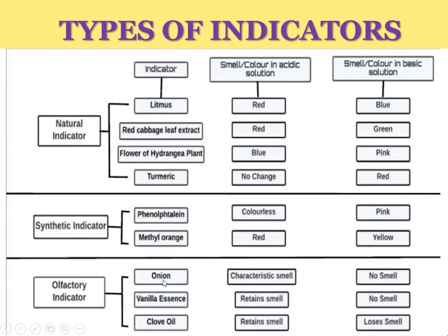Olfactory indicators include onion, which has a characteristic smell in acidic solution and low smell in basic solution. Vanilla essence retains its smell in acidic solution and has no smell in basic solution. Clove oil has retained smell and lost smell respectively. This is the whole concept of types of indicators. We will discuss each section in detail in the upcoming slides.